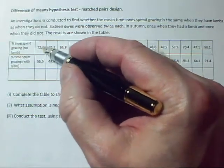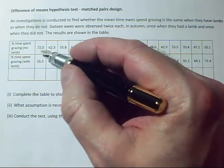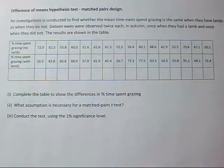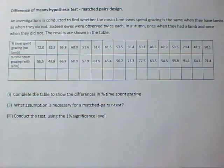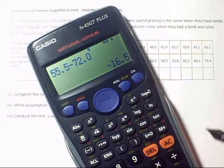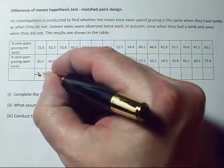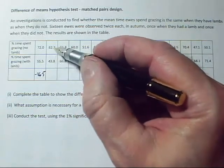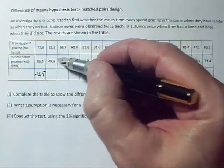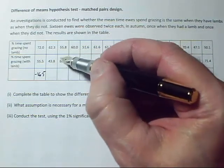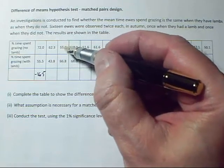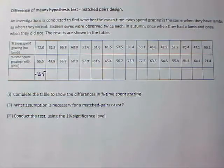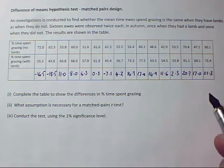It doesn't really matter which way around the subtraction is done. I'm thinking this is getting smaller, so I'll have a negative difference. I'm going to do 55.5 minus 72.0, and my calculator gives minus 16.5. I've got to be consistent and do all subtractions with the second value minus the first one — some will give a negative answer and some a positive. So I'll work out all those differences.